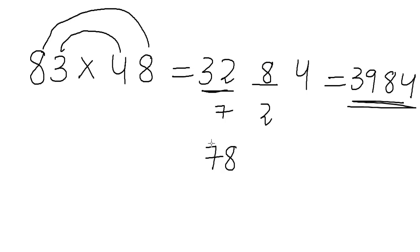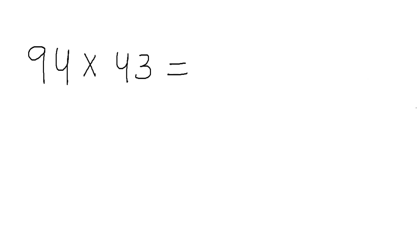We just kept 8 here. And we carry forward it as 7 ahead. And finally we added 7 to 32 to get our final answer which was 3984. So let's look at one last example. Suppose you have to find the value of 94 times 43.